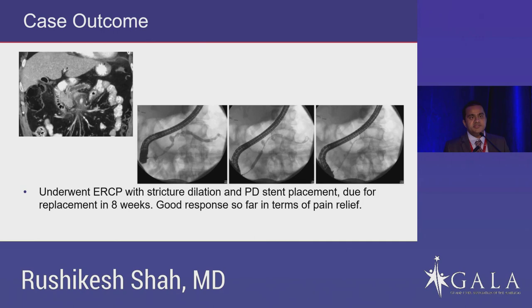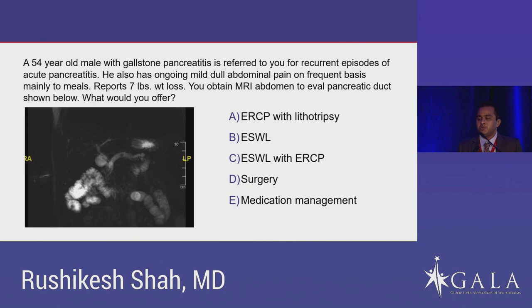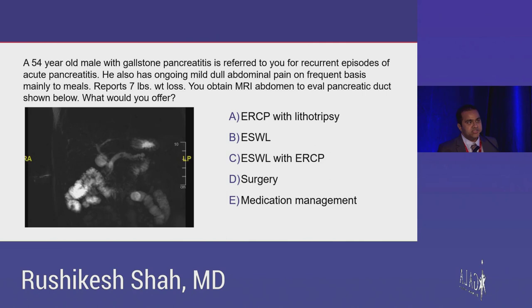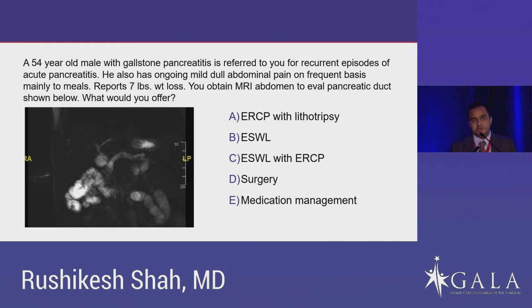Pancreatic duct stones — another patient, a 54-year-old male diagnosed with gallstone pancreatitis, referred for recurrent episodes of acute pancreatitis and ongoing mild dull abdominal pain. MRI showed a massively dilated pancreatic duct with a stone in the midbody, another stone in the head, and possibly a stricture in the head as well. He had one outside ERCP where they couldn't get into the pancreatic duct. The prevalence of stones increases to 50% five years after diagnosis of chronic pancreatitis. The most common risk factors are being male, a drinker, and heavy smoker. ERCP alone only works for small stones less than 5 mm, but extracorporeal shockwave lithotripsy (ESWL) is quite effective — short-term pain relief after ESWL alone was as high as 92%, and sustained pain relief at 28-month follow-up was 71%. When combining ESWL with endotherapy, the full success rate at four-year follow-up was 76%.